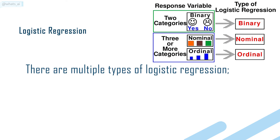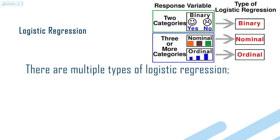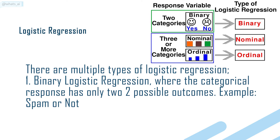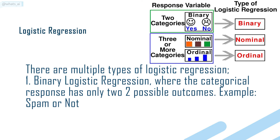There are multiple types of logistic regression. Binary logistic regression is where the categorical response has only two possible outcomes — for example, spam or not.